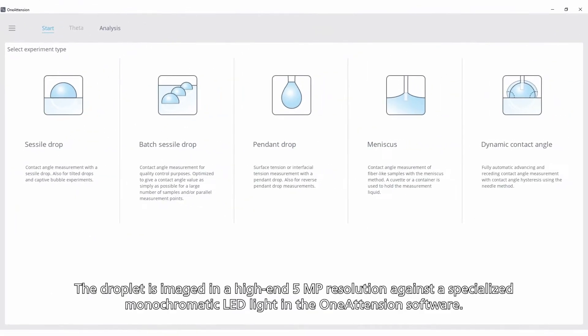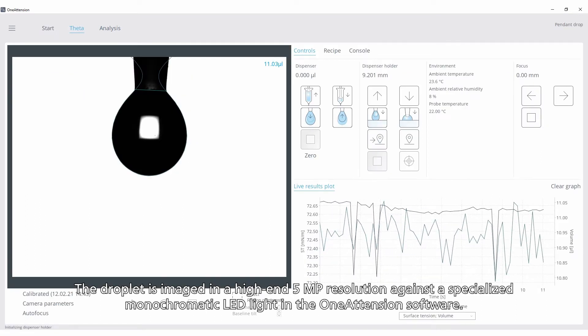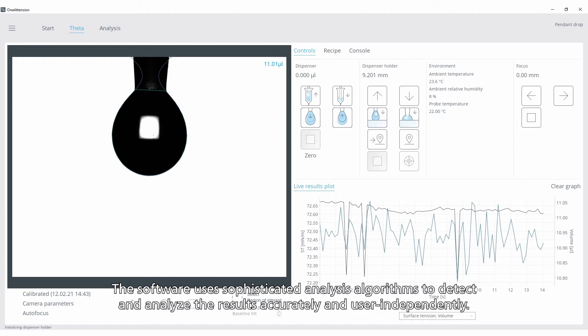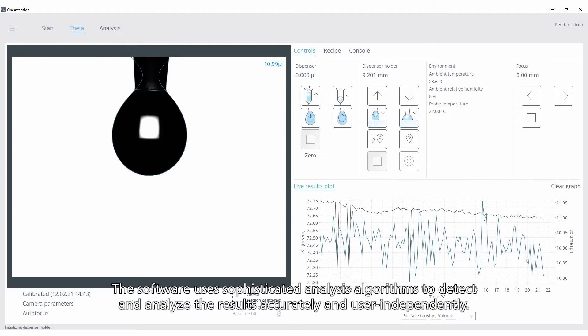The droplet is imaged in high-end 5MP resolution against a specialized monochromatic LED light in the OneAttention software. The software uses sophisticated analysis algorithms to detect and analyze the results accurately and user-independently.